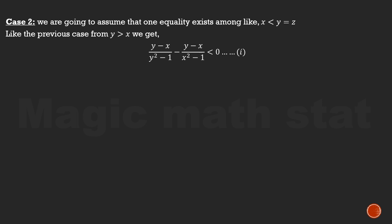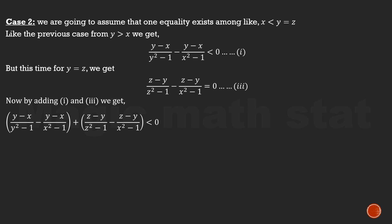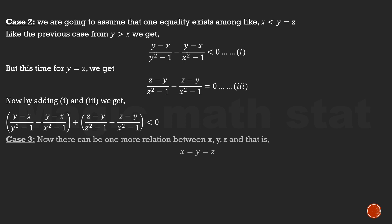Case 2: assume one equality exists among x, y, z — for example, x < y = z. So y and z are equal but x and y are not. From y > x we still get Inequality 1. But since y = z, we have z-y = 0, so (z-y)/(z²-1) minus (z-y)/(x²-1) = 0. Call this Equation 3. Adding Inequality 1 and Equation 3 gives a negative result, so the simplified inequality holds.